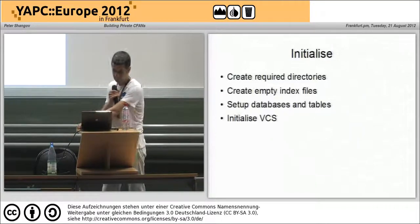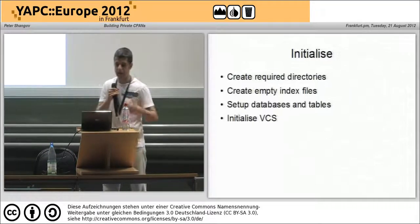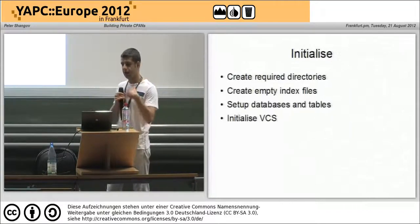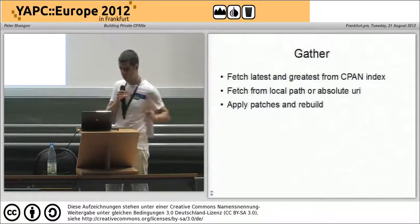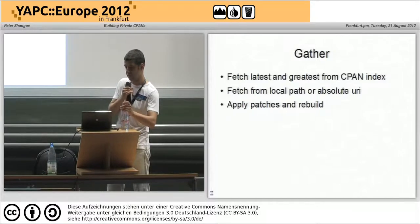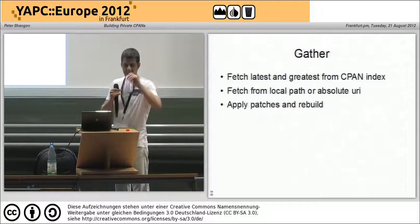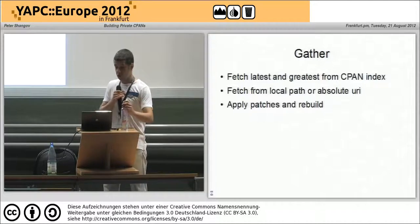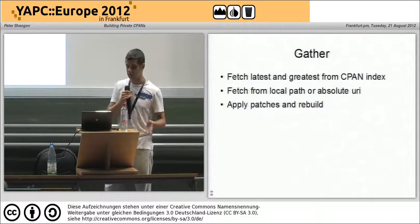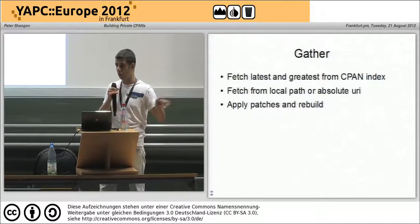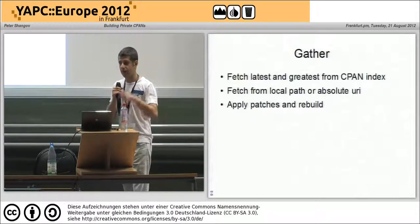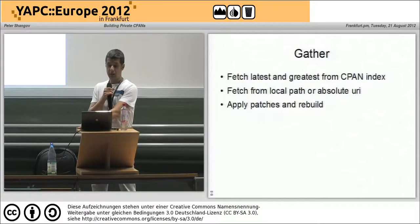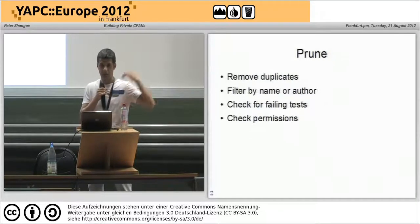The initialize stage is run when you create a new repo. Basically, you create everything that later stages would expect to be there: any directories, empty databases, index files, or initialize your version control system if you're going to use one. Then there's the gather stage, the first one in the update process. Its purpose is to create the list of distributions you want to add to your repository. You could get that list from the indexes of a CPAN mirror, or from an explicit list of local paths or absolute URIs, or do something more complicated such as get a distribution from CPAN, apply some local patches, and then mark that for addition. You can combine different plugins to customize your list.